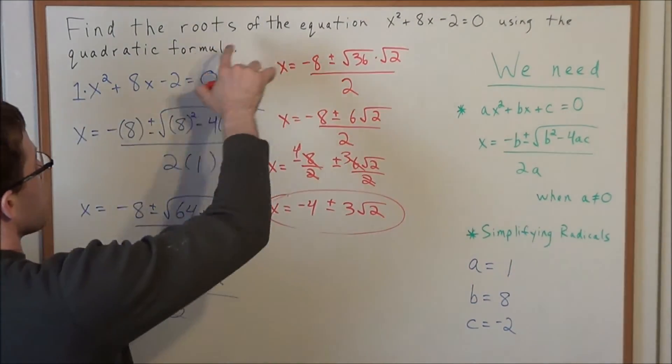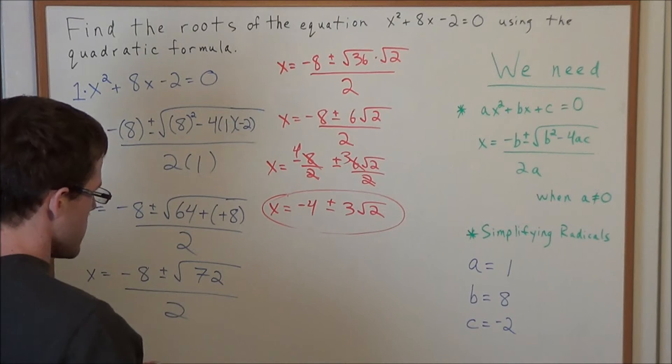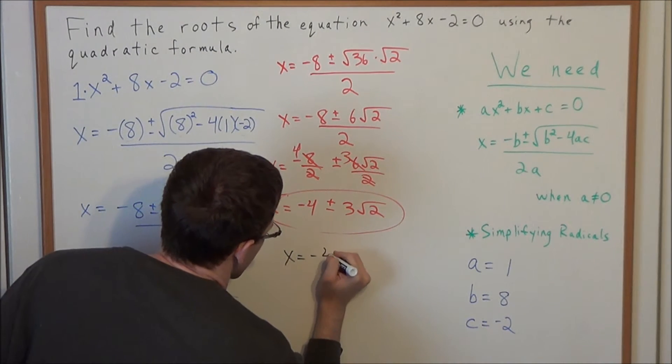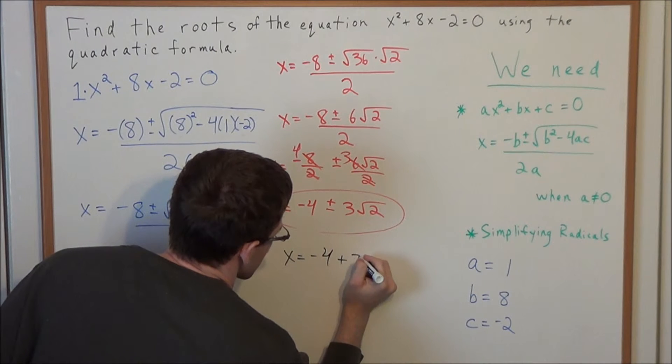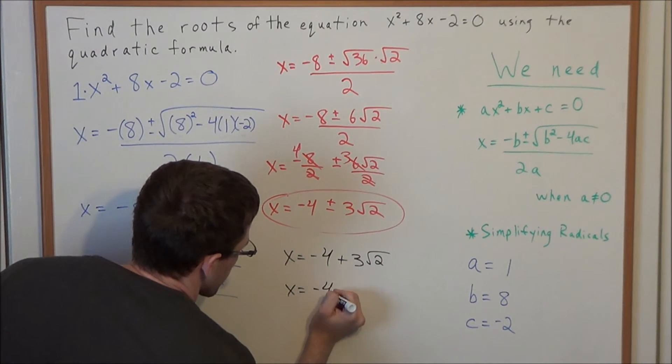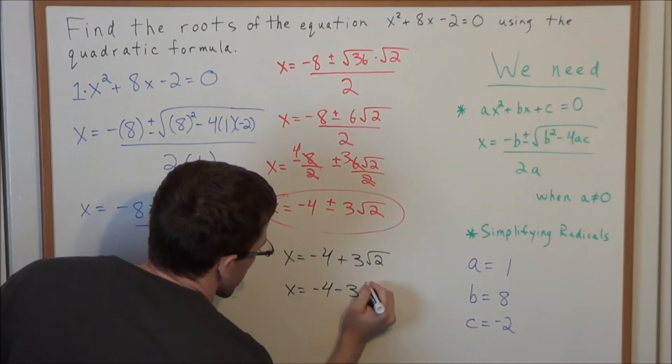But if they wanted both roots written explicitly, we would have the first solution would be x = -4 + 3√2, and x = -4 - 3√2.